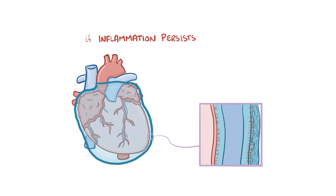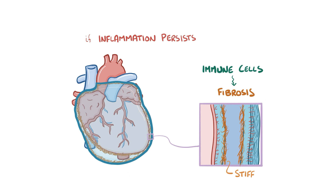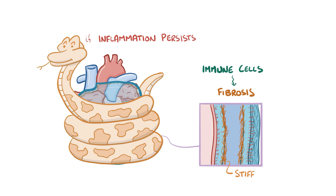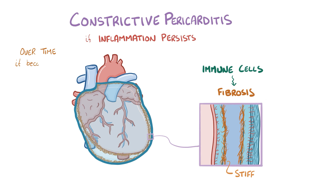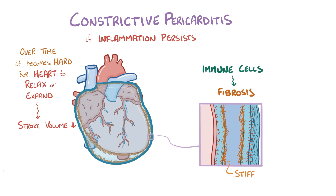When the inflammation persists, immune cells can initiate fibrosis of the serous pericardium, producing an inelastic shell around the heart — like the heart is wrapped by a boa constrictor. This is called constrictive pericarditis. Over time, it becomes harder for the heart to relax or expand, stroke volume goes down, and the heart rate goes up to compensate. This is similar to tamponade physiology, but happens more gradually and results from a change in the composition of the serous pericardium rather than a fluid collection.